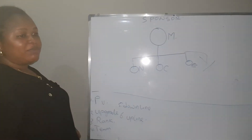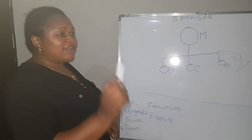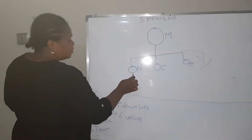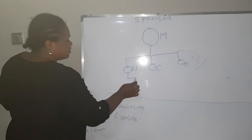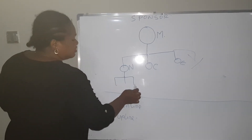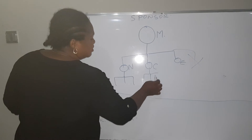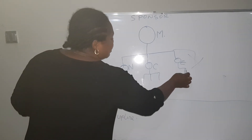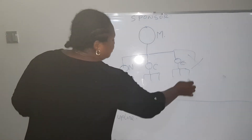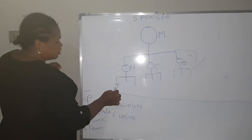Mary Jane spoke with Mr. Julius, he accepted, and she sponsored Mr. Julius. Because Mrs. Nkechi, Mrs. Cecilia, and Mrs. Estella each need to build their legs, Mary Jane placed Mr. Julius under Mrs. Nkechi.